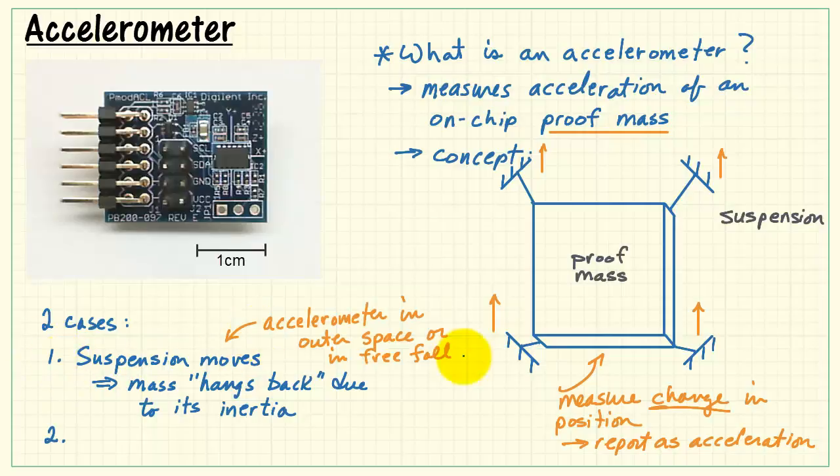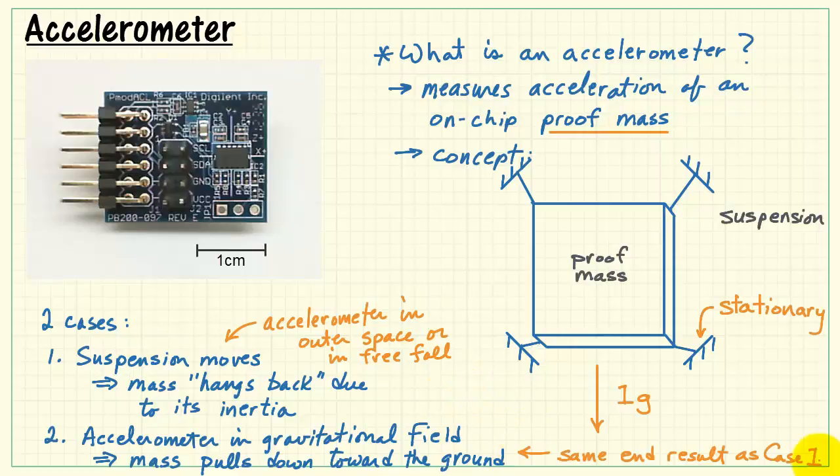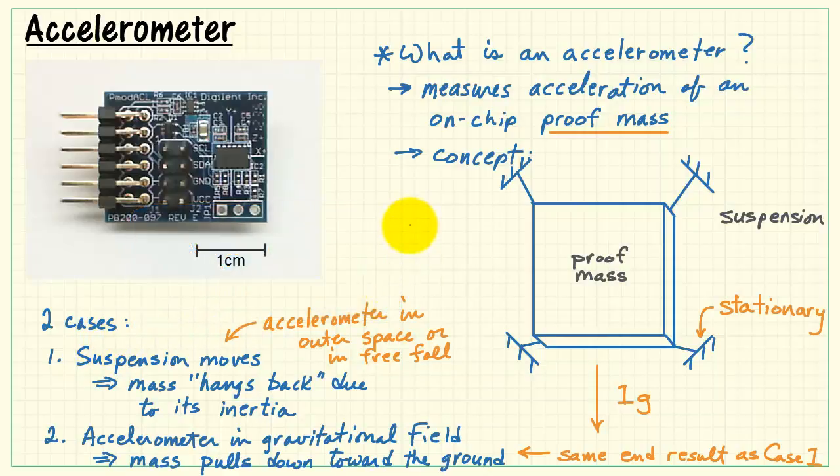This idea is based on the accelerometer in outer space or in free fall. So initially, the proof mass and the suspension had no relative motion. Now, when the accelerometer is in a gravitational field, so this is a second case. Suspension is stationary. Proof mass is drooping down simply because its mass pulls down towards the ground. Now, the interesting thing here is that this is the same end result as case one. And in fact, the two cases are completely indistinguishable from each other. So any relative motion between the proof mass and its suspension is acceleration.